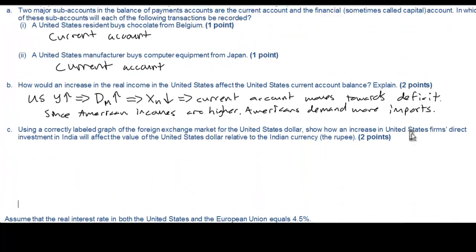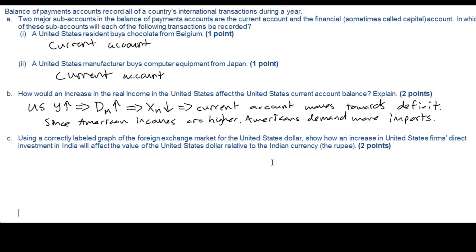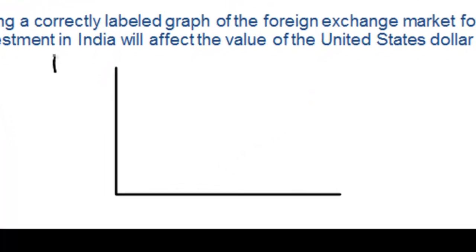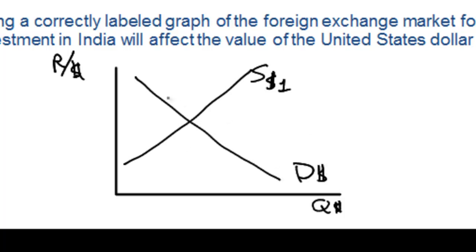Part C asks us to use a forex market to show the effect on the US dollar in India if American firms increase their investment activity in India. So we're going to draw a market for the US dollar in India showing the rupee value of the dollar. We've got the supply of dollars and the demand for dollars and the original equilibrium exchange rate of the dollar in India.